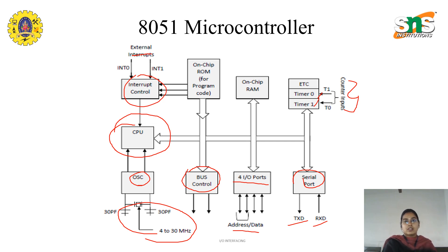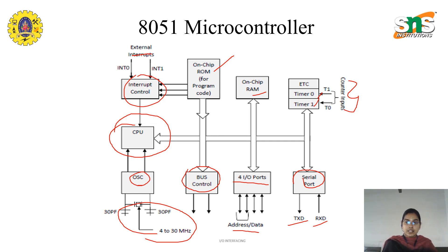Two major components are the on-chip ROM and on-chip RAM. On-chip ROM, which stands for Read-Only Memory, is used only for storing program code. On-chip RAM is used for storing inputs and outputs during processing and for further processing as well. This inbuilt RAM and ROM is the unique feature that differentiates the microcontroller from a microprocessor.